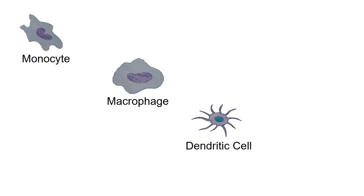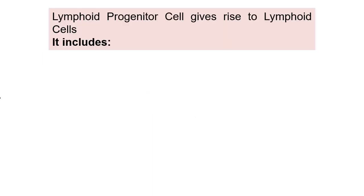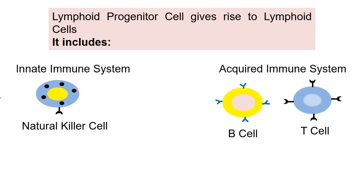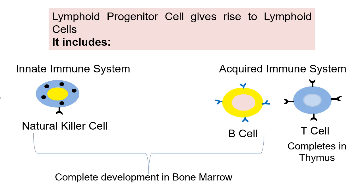The other myeloid cells are monocyte, macrophage, and dendritic cells — these three are phagocytic in nature. It also includes the mast cell, which is a granulocyte. The lymphoid progenitor cell gives rise to lymphoid cells: natural killer cell, B cell, and T cell. Natural killer cell is part of the innate immune system, whereas B cell and T cell are part of the acquired immune system. T cell completes development in the thymus, whereas natural killer cell and B cell complete development in the bone marrow.